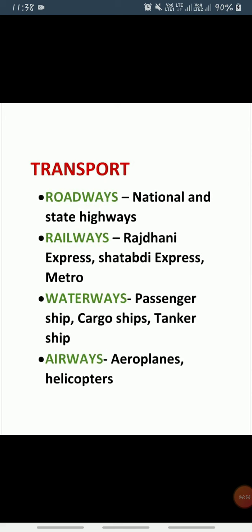Next is waterways. Water transport is the cheapest mode of transport and most suitable for transporting heavy goods. There are three types of ships: passenger ships which carry people, cargo ships which transport goods, and tanker ships which carry petroleum and oil. Along India's coastline, there are 13 major and nearly 200 minor ports.